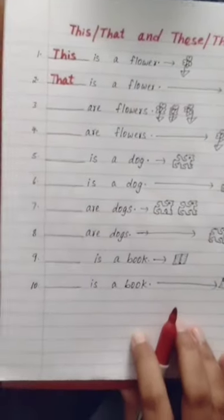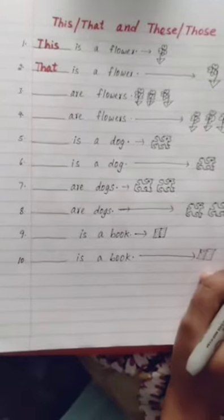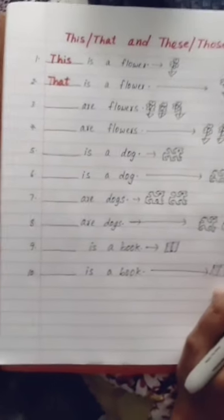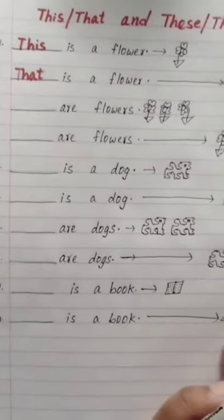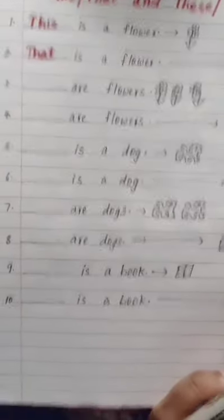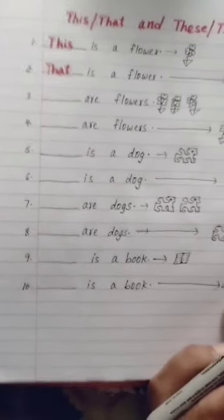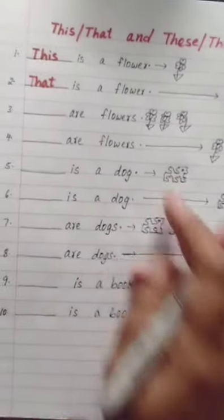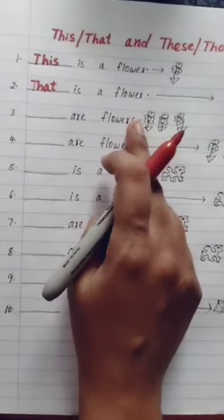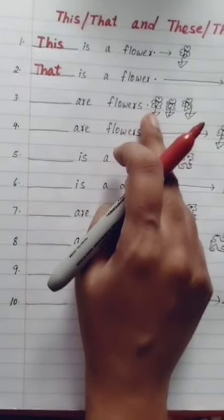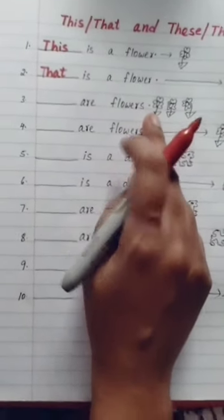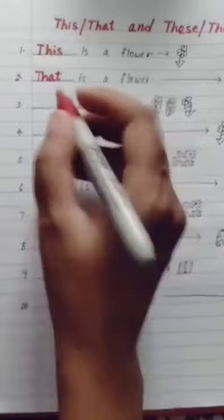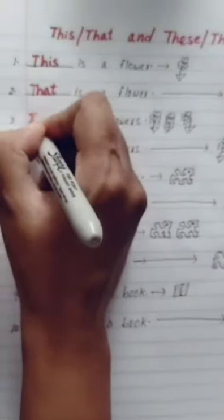Third example: blank are flowers. There are three flowers here and they are very near. So what do we write? 'These' — these are flowers.